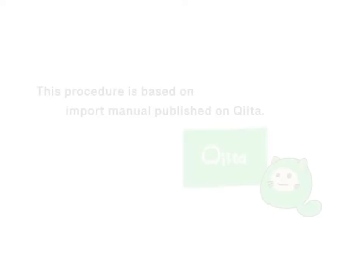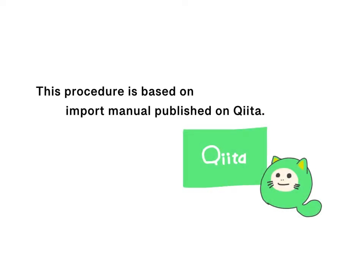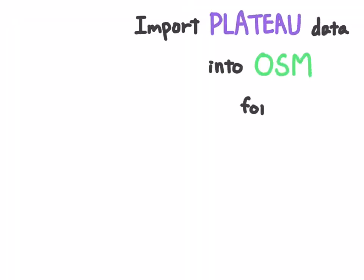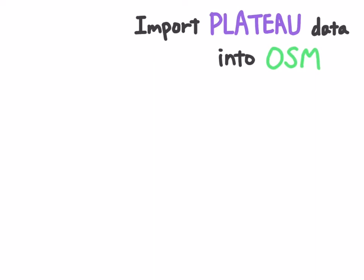Hi, in this video, we explain the procedure of importing part data to OpenStreetMap in an easy-to-understand way using graphic record. First, download the latest version of JABB and JOSM to your PC in advance. After that, it is time to start the import procedure.